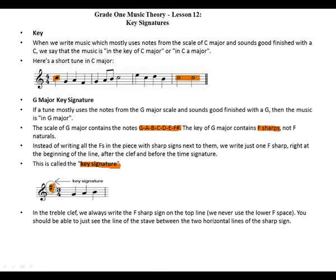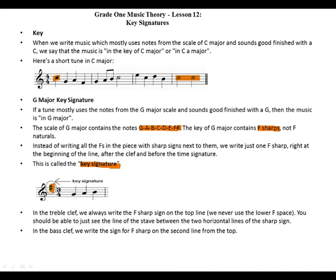In the treble clef we always write the F sharp sign on the top line. You should be able to just see the line of the stave between the two horizontal lines of the F sharp sign. In the bass clef we write the sign for F sharp on the second line from the top.